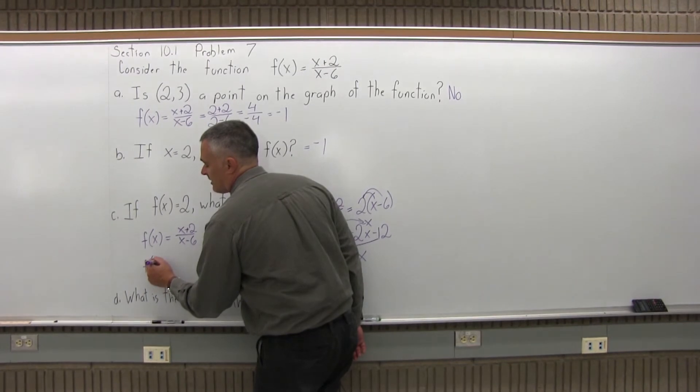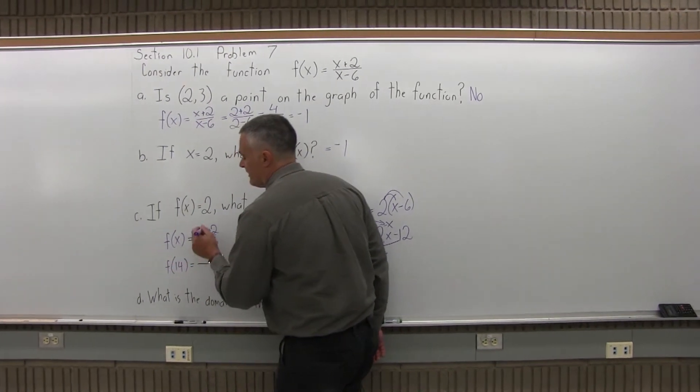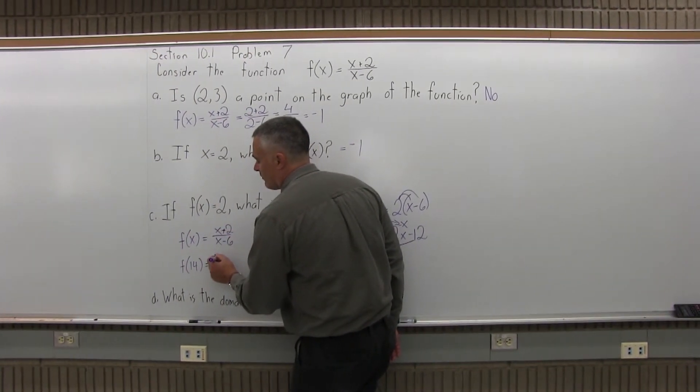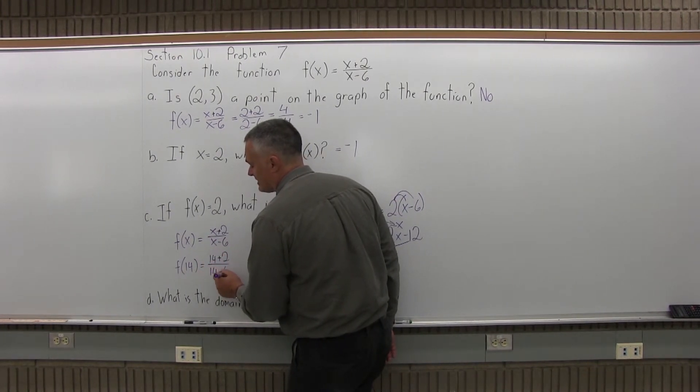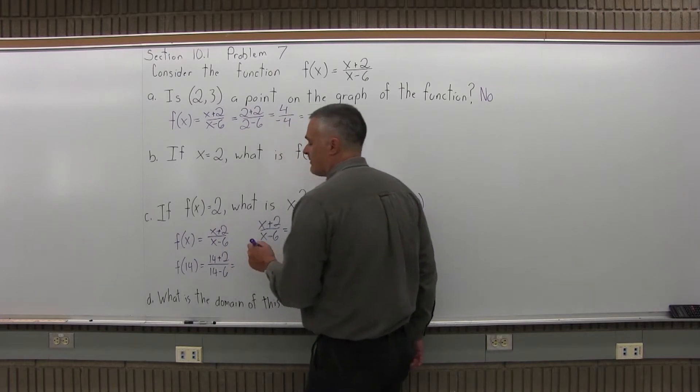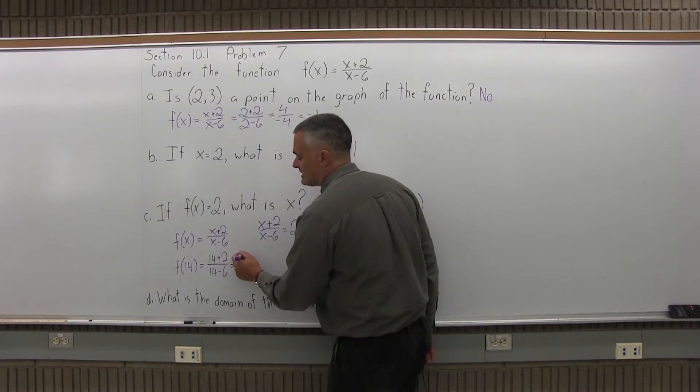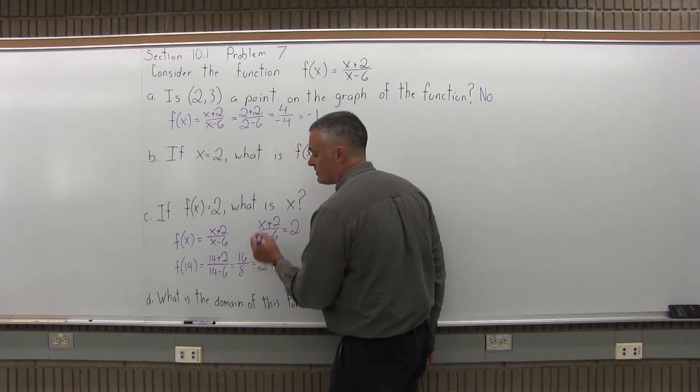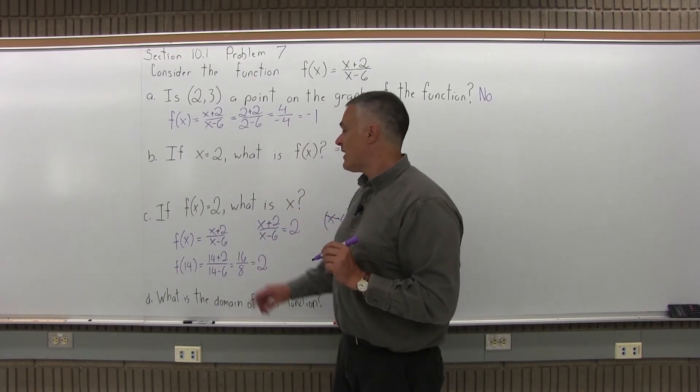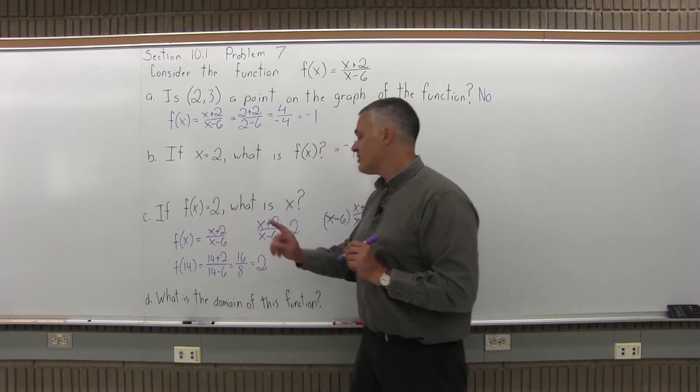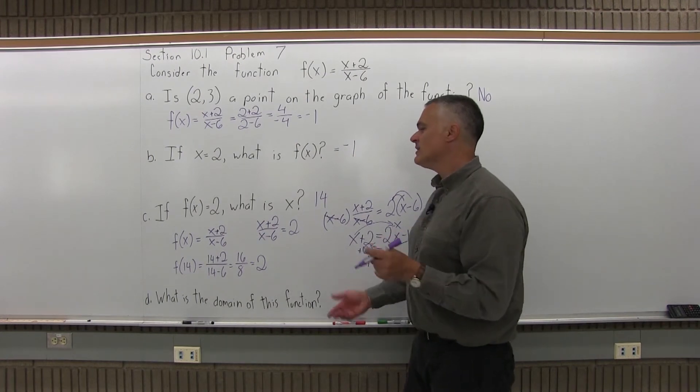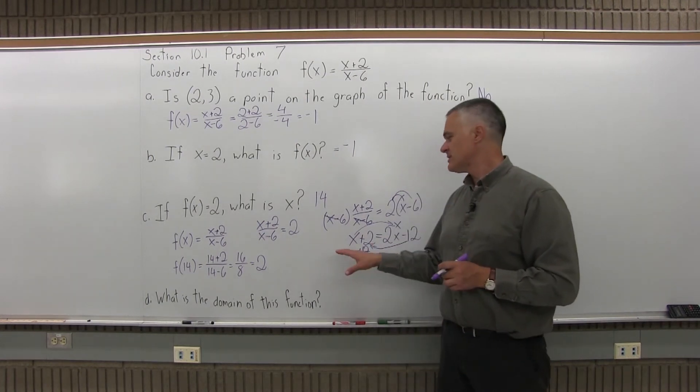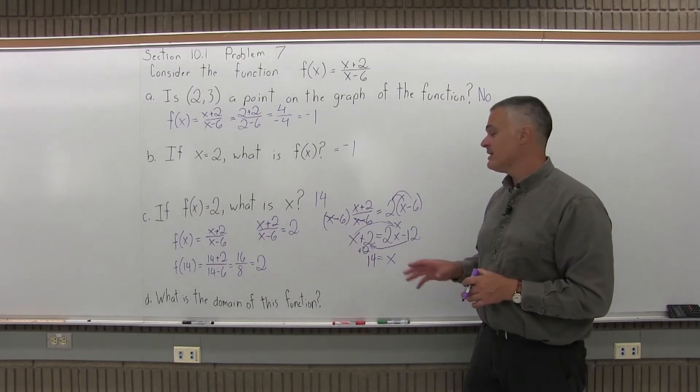So f(x) will become f(14). The x plus 2 on top will become 14 plus 2. The x minus 6 in the denominator will become 14 minus 6. And in the top of that fraction, 14 plus 2 is 16. In the bottom, 14 minus 6 is 8. 16 over 8, sure enough, it reduces to 2. So if I got out a 2, I must have put in a 14. So the answer to part C is 14. And again, you'd eventually get that with trial and error, but this is the more mathematical way, and it's quicker too.